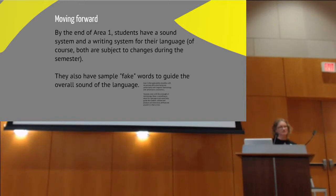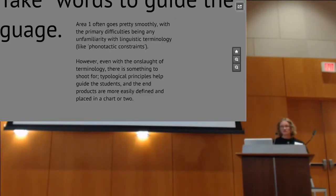Within area one, this usually goes pretty smoothly, even for those students who've never had linguistics before. Once they get over that onslaught of terminology and realize these things I can relate to. I know what syllables are. I can do this. They have definite things to shoot for because these typological principles especially give them ideas for, okay, I'm going to include these sounds. Maybe I should include these sounds as well. So they have a target. And they can put these targets in charts, which we love, right?